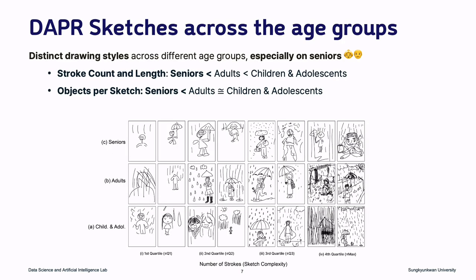After creating the sketches, we analyze stroke patterns and sketch content to see if and how drawing styles differ among the age groups. The analysis of stroke count, stroke length, and objects per sketch reveals distinct characteristics in drawings from various age groups, especially among seniors.